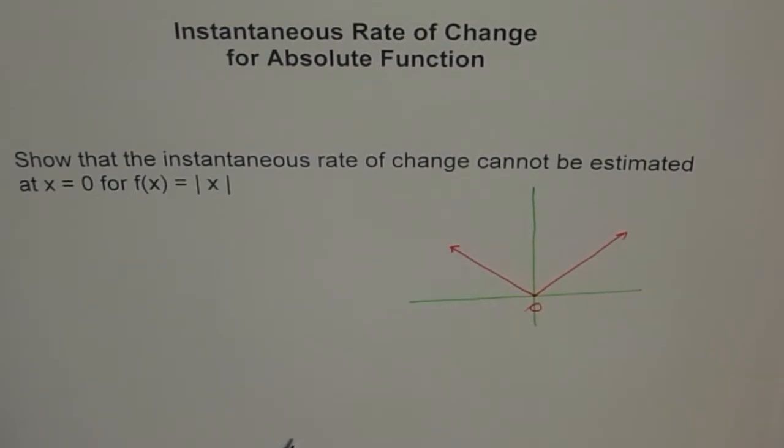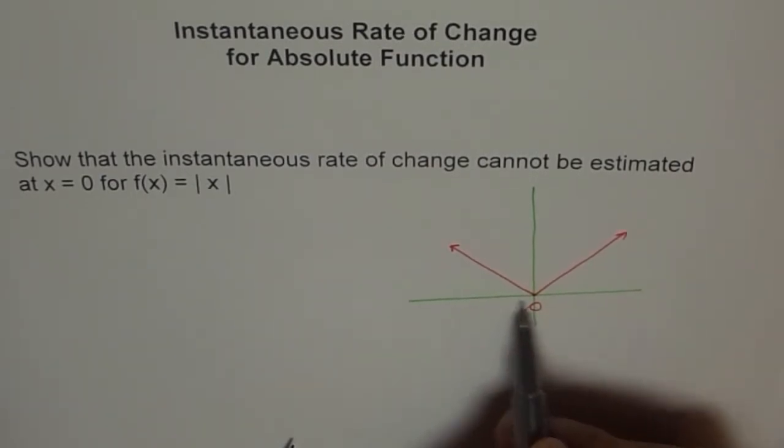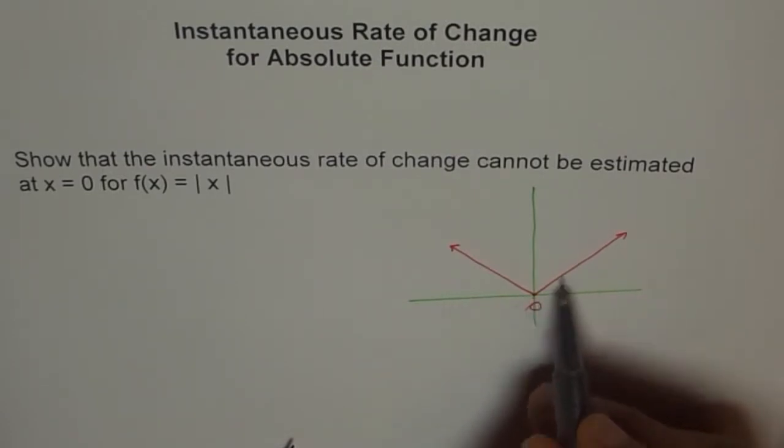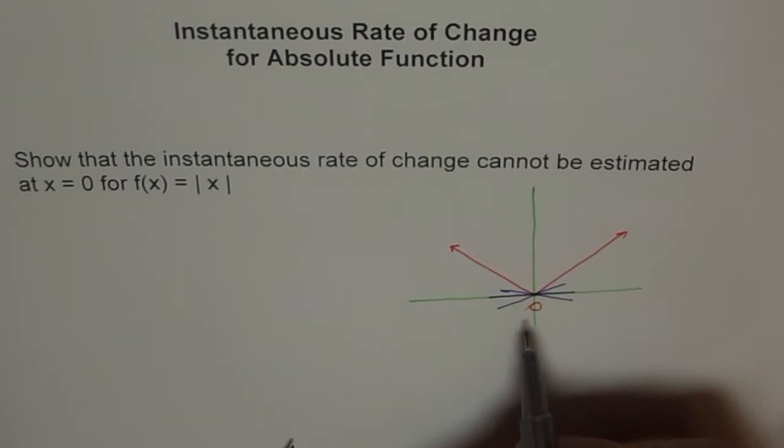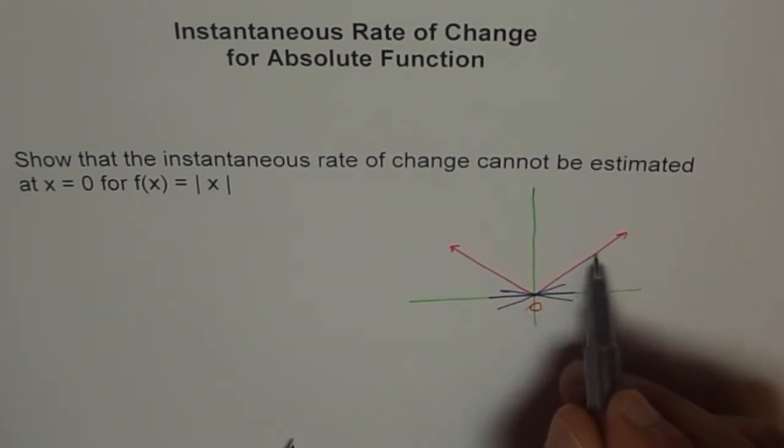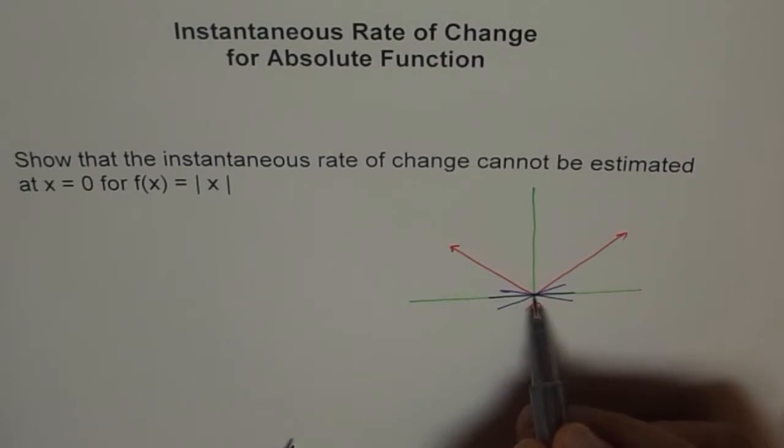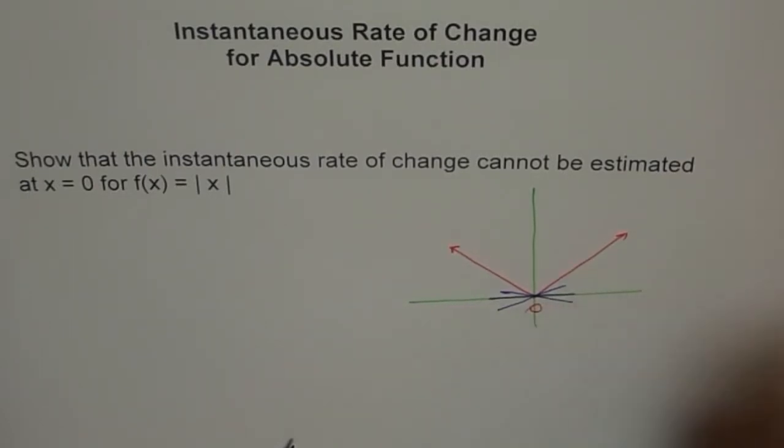So, graphically I can show you. Well, many people think it is 0 because this line seems to be tangent to this. So, you could say this line is a tangent to it but how about this line? This line also touches the point at one point. Like this I can draw so many lines which will touch this curve at origin only at one point. Think like this.